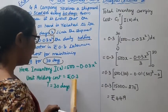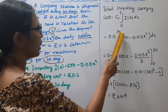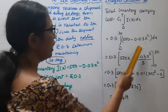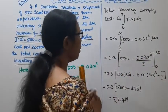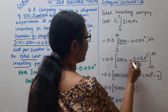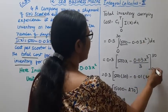This gives us 0.3 times integral from 0 to T of (500 - 0.03x²)dx, which equals 0.3 times [500x - 0.03x³/3] from 0 to 30.